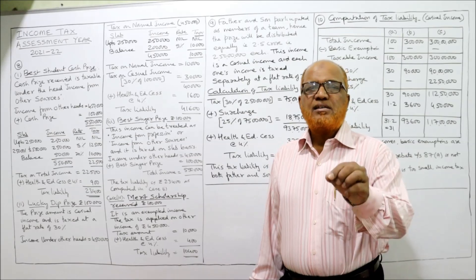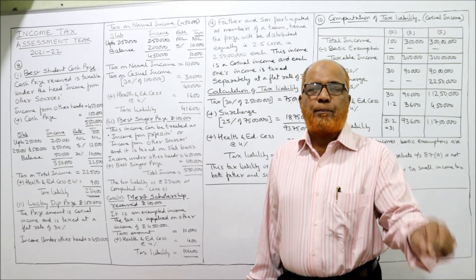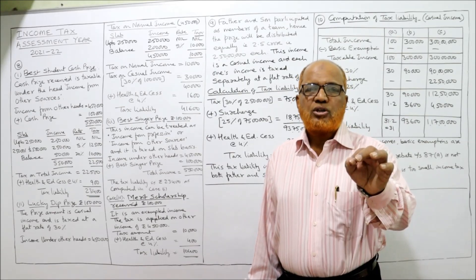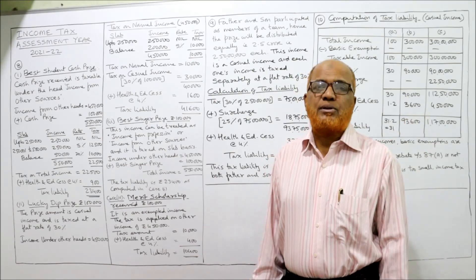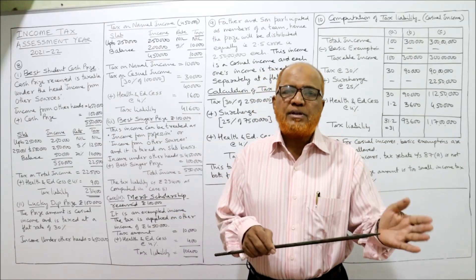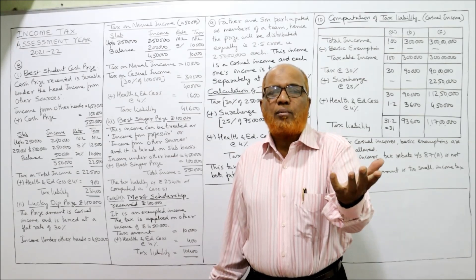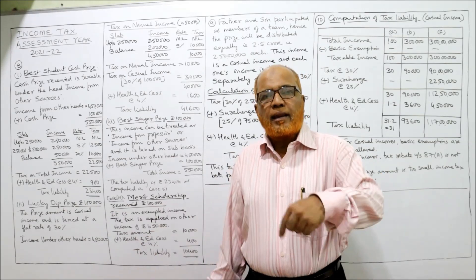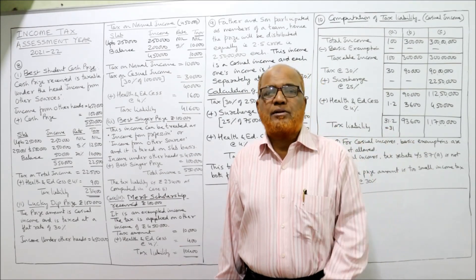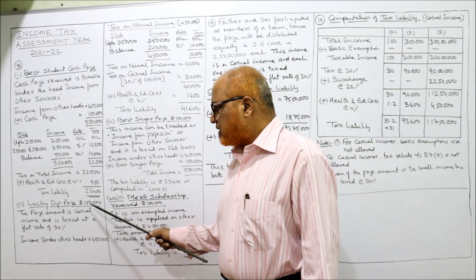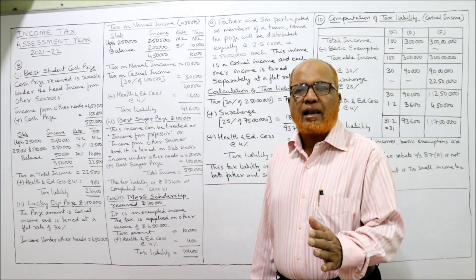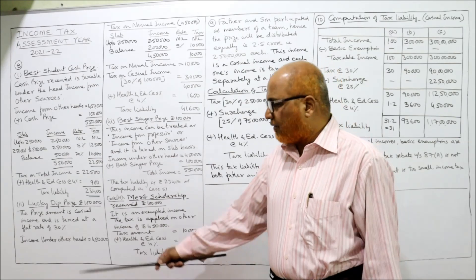Situation 2: Lucky dip prize of 1,00,000 rupees. A lucky dip prize is a casual income on which a flat rate of tax of 30% applies. We keep 4,50,000 (normal income, slab system) separate from 1,00,000 (casual income, taxed at flat 30%). First compute tax on normal income of 4,50,000.